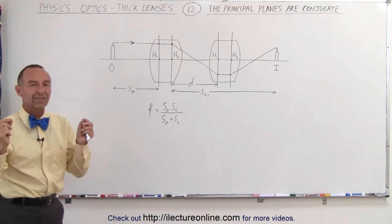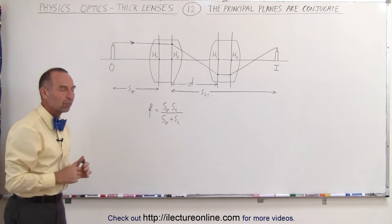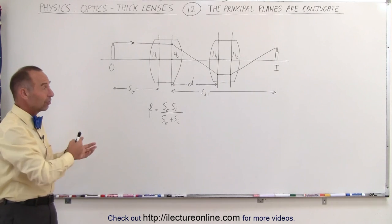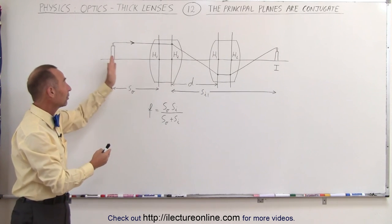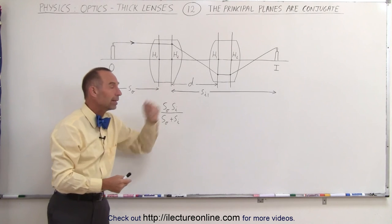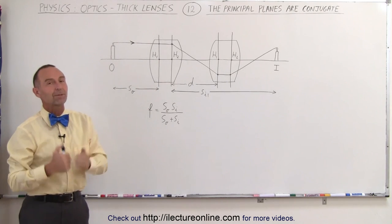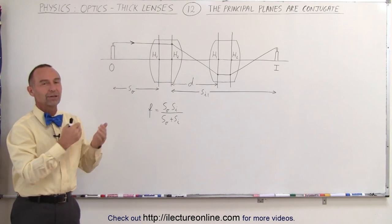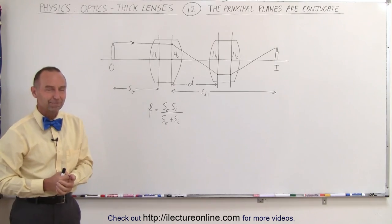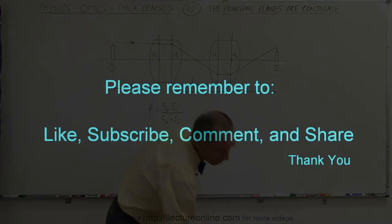So H1 and H2 are considered coincident for all the measurements that we use to find the distance from the lens or from the principal plane to the object and from the principal plane to the image. So let's keep that in mind as we continue with the thick lens.